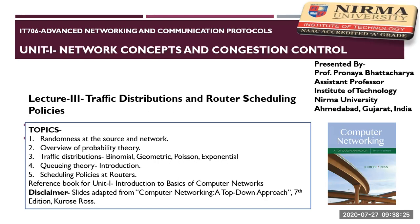The first topic we are going to look at is multimedia traffic, where randomness at the source and network is an important aspect. Randomness means there are variations and delays in packet arrivals, which creates traffic that is actually bursty and is a major cause of congestion. We will see the policies to mitigate such traffic.